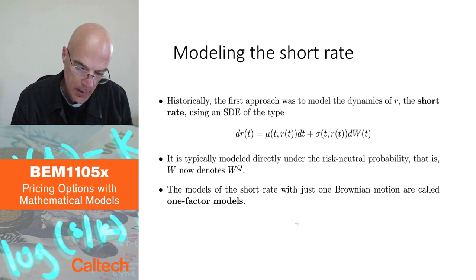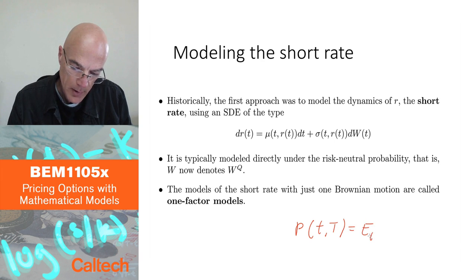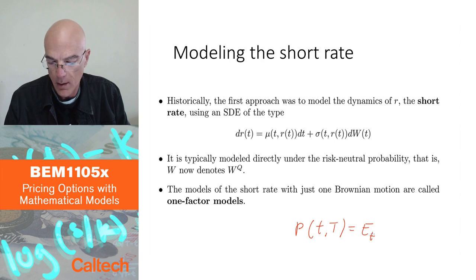Just to remind you, this was the main, here at the bottom of the slide, the main formula we had, the bond price was the expected value under the pricing probability of the discount factor e to the minus integral